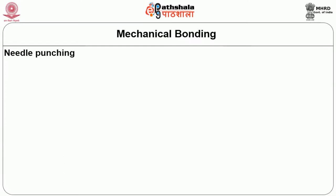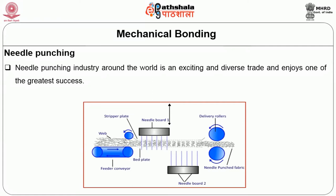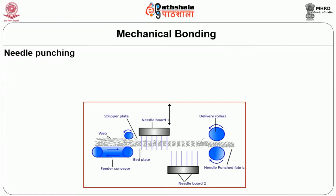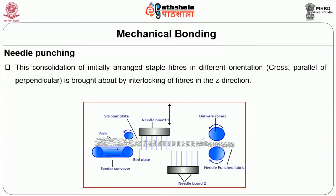The mechanical bonding process — needle punching technique: the needle punching industry around the world is an exciting and diverse trade and enjoys one of the greatest successes. In this method, web bonding or consolidation is brought about by repeated insertion of barbed needles into the preformed dry fibrous web, also called a batt, which is unbound, thick, and voluminous, either from one side or from both sides. Consolidation of initially arranged staple fibers — in different orientations: cross, parallel, or perpendicular — is brought about by interlocking of fibers in the z-direction.